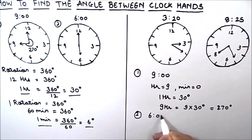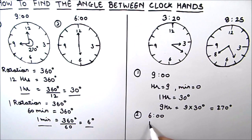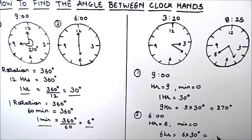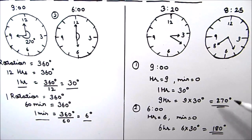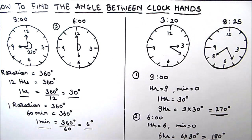In our next example, the time is 6 o'clock. The hour hand is at 6, so hours is 6 and minute is 0. We can find the angle for 6 hours as 6 times 30 degrees, which is equal to 180 degrees. So here we see the angle made. These are two examples in which the minute hand is at 12, or we can say the angle made by the minute hand is 0 degrees. Now let's try a few more examples where the time is in hours and minutes both.